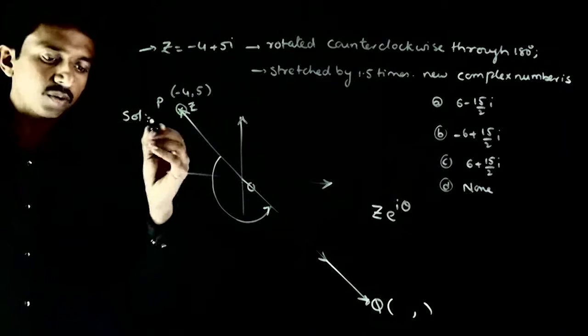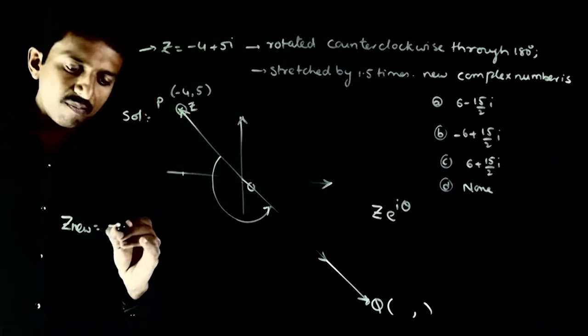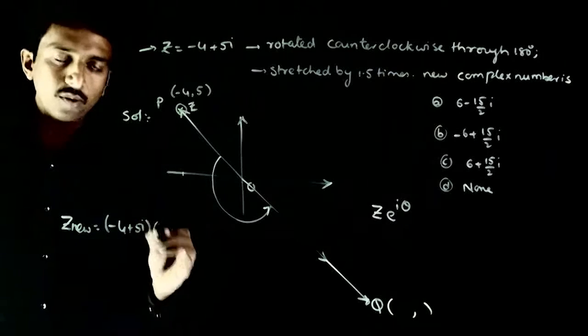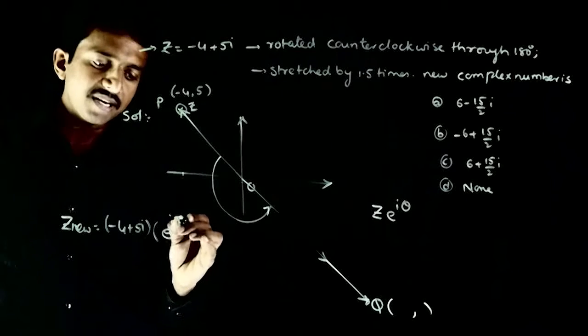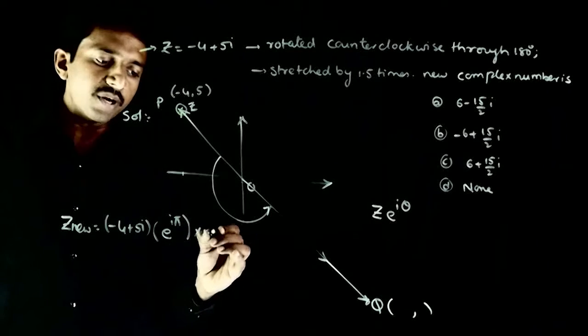So apply this. So the new z, z_new is equal to (-4 + 5i). I have to rotate it 180 degrees, so I multiply by e^(iπ), e^(iπ) times 1.5.